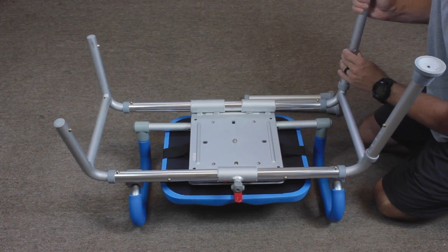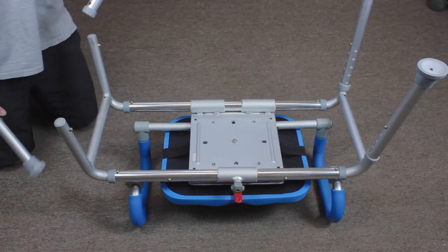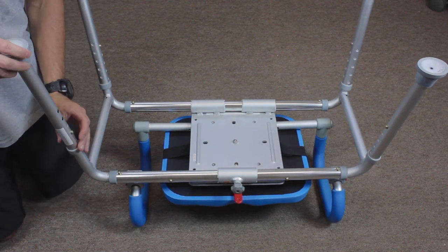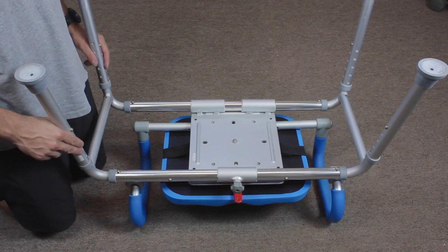Once you have all the legs in, you'll want to flip the chair over and ensure that the chair is level. Once it's level, we can move on to installing the backrest.